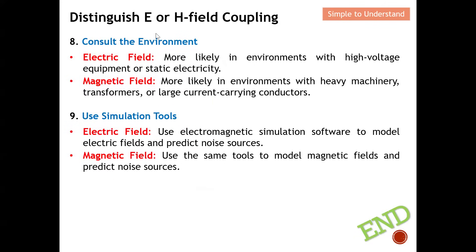Consulting the operating environment also helps. Electric field noise is more likely in environments with high-voltage equipment or static electricity, since electric field is essentially a voltage difference. Magnetic field noise is more likely in environments with heavy machinery or transformers carrying large currents — the larger the current, the greater the magnetic field coupling.